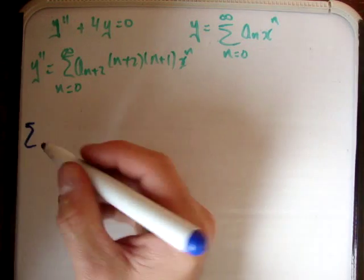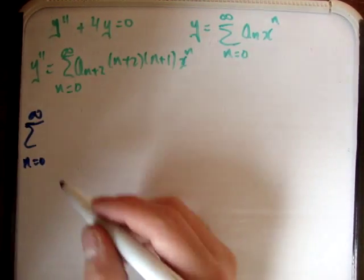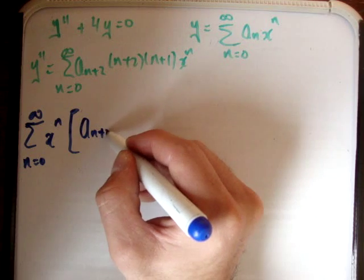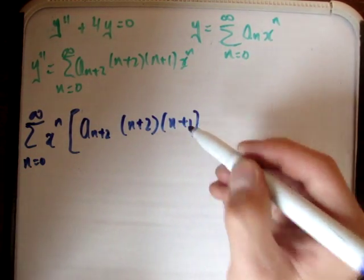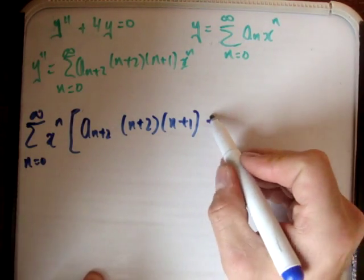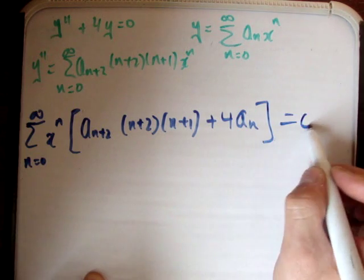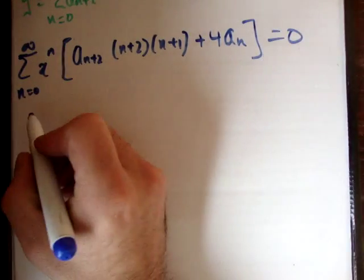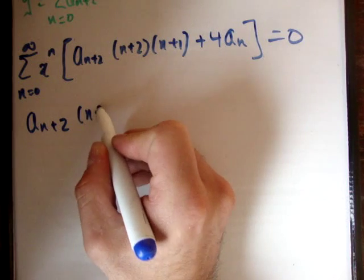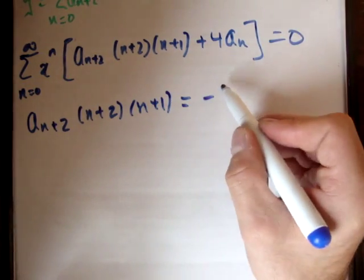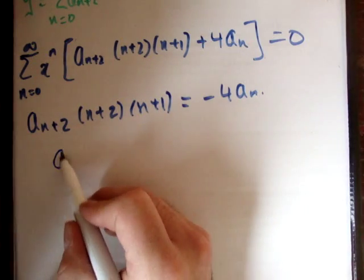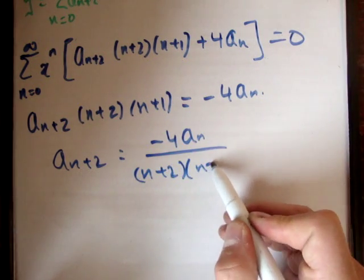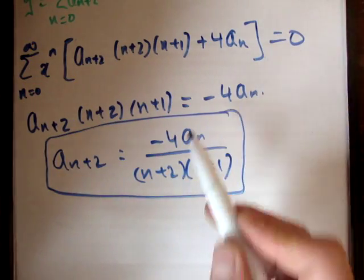Taking the sum and x to the n as common factors, we get a_{n+2} times (n+2)(n+1) plus 4a_n equals 0. This gives us a_{n+2} times (n+2)(n+1) equals negative 4 a_n, so a_{n+2} equals negative 4 times a_n over (n+2)(n+1). This is called the recurrence relation.